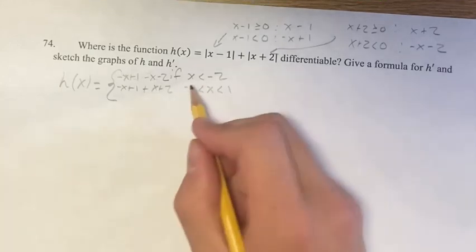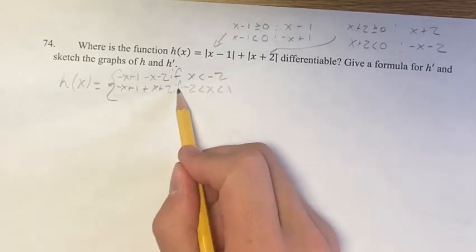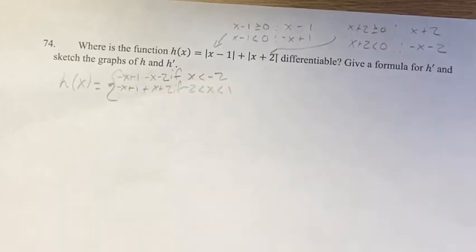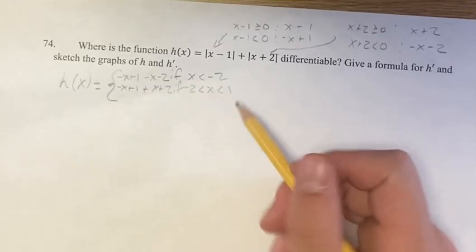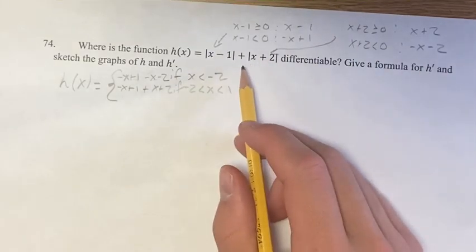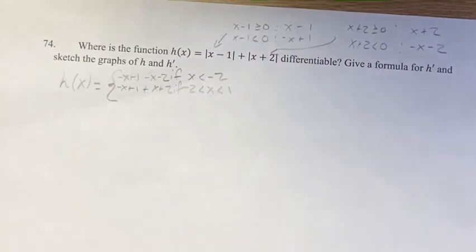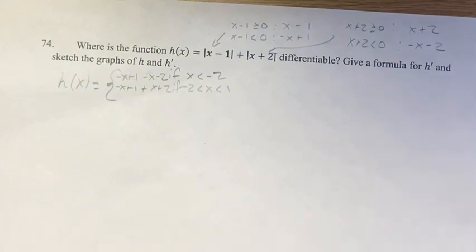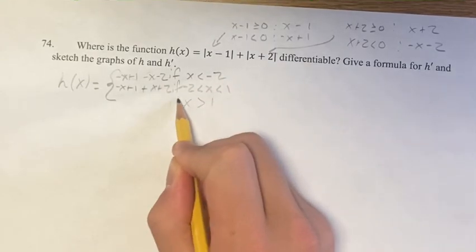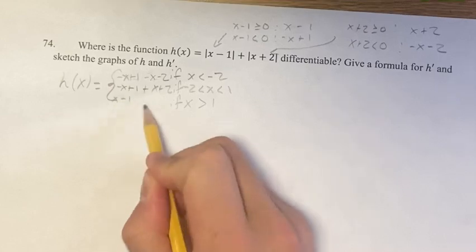If this isn't clear, you can just plug in an example. For x less than negative 2, try x equals negative 3: negative 3 minus 1 is negative 4, and negative 3 plus 2 is negative — they're both negative. Then when x is greater than 1, both pieces are going to be positive.